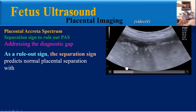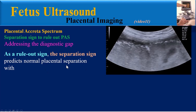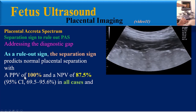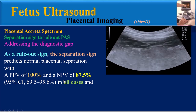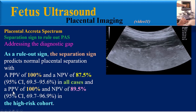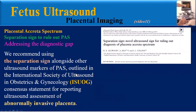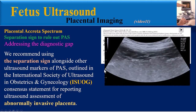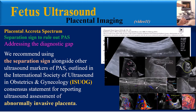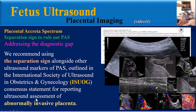As a rule-out sign, the separation sign predicts normal placental separation with a positive predictive value of 100% and a negative predictive value of 87% in all cases, and a positive predictive value of 100% and negative predictive value of 89% in high-risk cases. Finally, the authors of this paper recommend using the separation sign alongside other ultrasound markers of PAS outlined in the ISUOG consensus statement for reporting ultrasound assessment of abnormally invasive placenta.